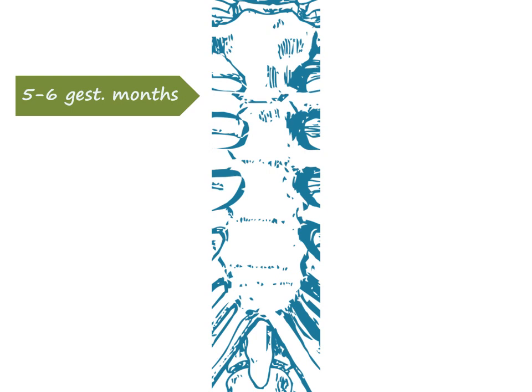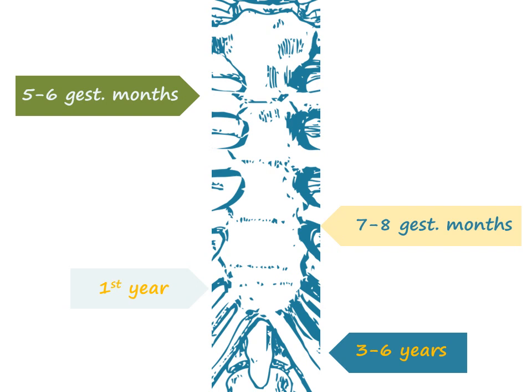The manubrium ossifies between five to six gestational months, followed by the first body's sternebra. The second and third body's sternebrae will ossify at seven or eight gestational months. The fourth sternebra will ossify in the first year after birth. The xiphoid process may ossify between three and six years of age,